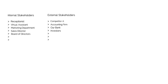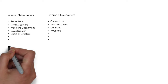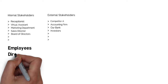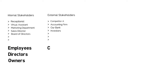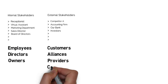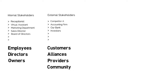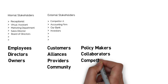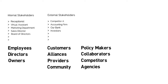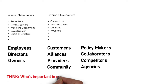When we categorise stakeholders, we're typically thinking internal stakeholders are employees, directors and owners. And external stakeholders are customers, alliances, providers, people in the community, policy makers, government, collaborators, and competitors. It's going to be different for each project, each brand, each business, so it's really important you think about who these people are in relation to what you're doing.